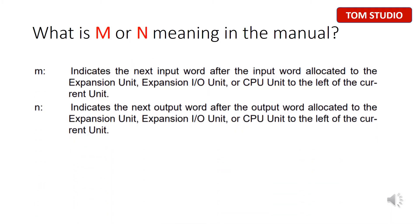The most important thing for setting up CP Series Analog is to assign the correct PLC memory addressing for CP Series Analog input or output modules. In the CP Series Operation Manual, you might have read some settings that always mention M and N. M indicates the next input word after the input word allocated to the expansion unit, expansion IO unit, or CPU unit to the left of the current unit.